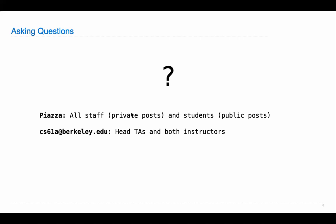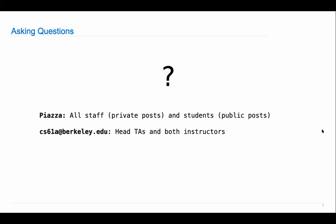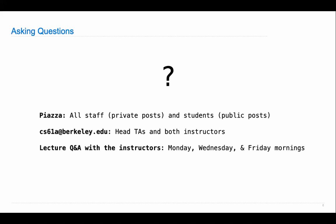You can email us. You can email both Hani and me and the head TAs all at one email address: cs61a@berkeley.edu. That's a great way to contact us instead of sending direct emails to both of us separately. We do have Q&As with the instructors every Monday, Wednesday, and Friday morning. You could email us directly, but this is often the slowest option — remember, 2,000 of you and two of us. So I'd recommend emailing cs61a@berkeley.edu; you'll hit both of us plus a few other people.